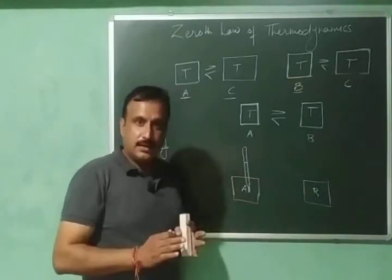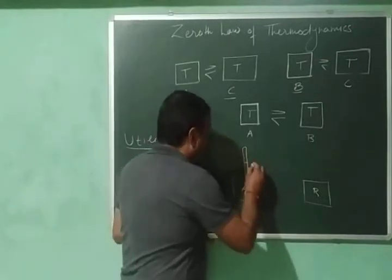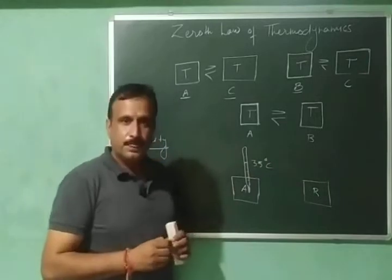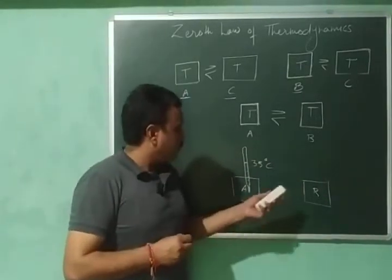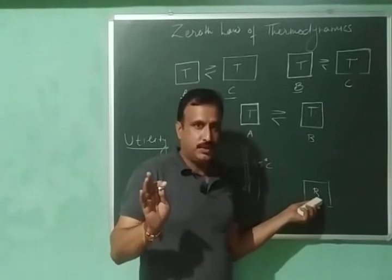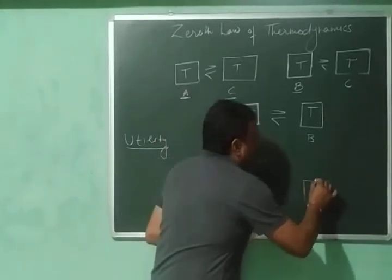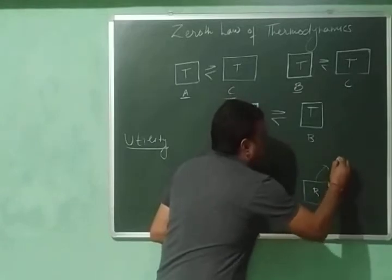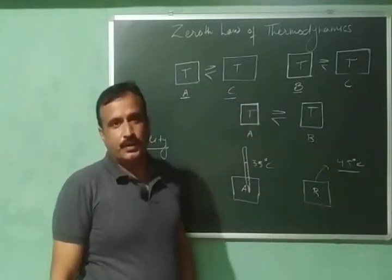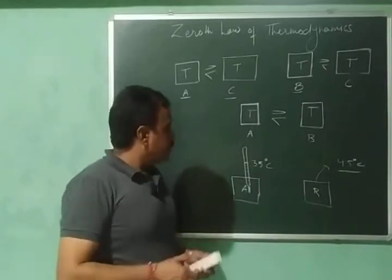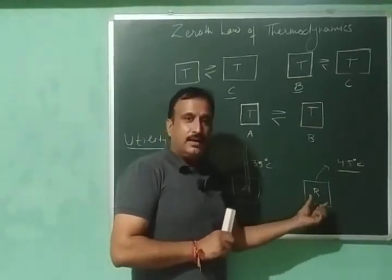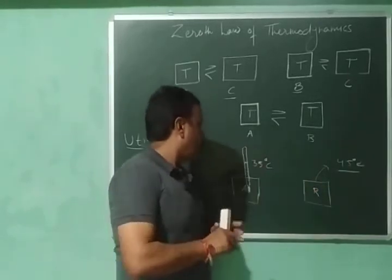Suppose at that time the reading of the thermometer is 35 degree Celsius. I will then measure the temperature of body B by following the same procedure, and the temperature of body B comes out to be 45 degree Celsius. This means that body B is at a higher temperature than body A.